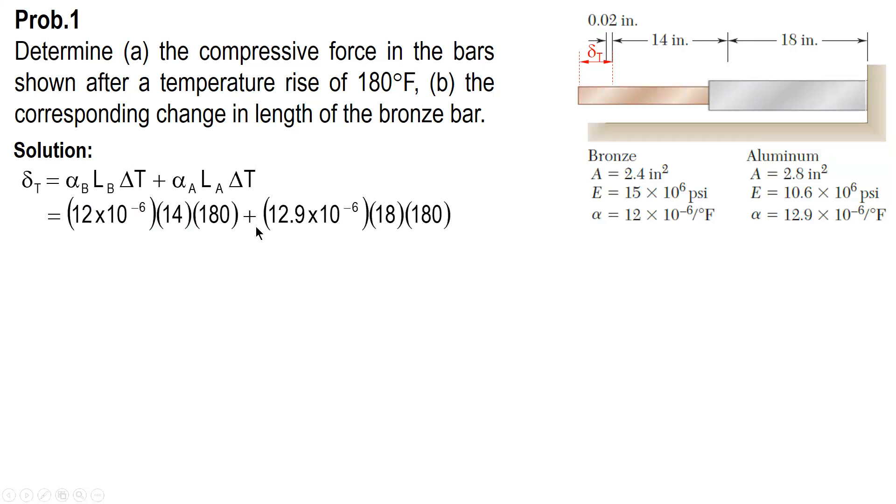Substitute all values and then compute. Our delta T is equal to 0.072036 inches. Considering all the units, like for alpha, it's per degrees Fahrenheit.